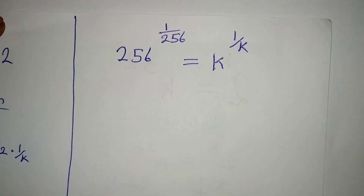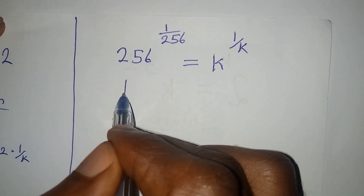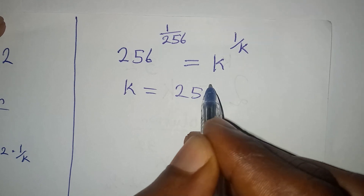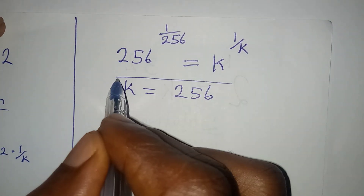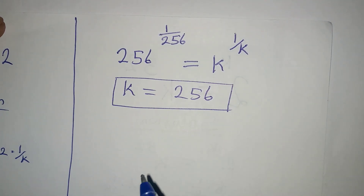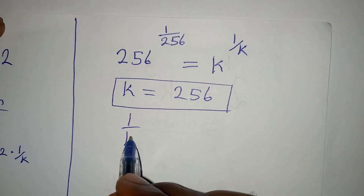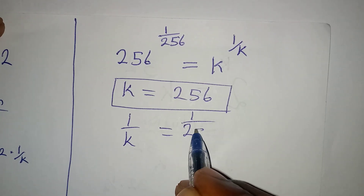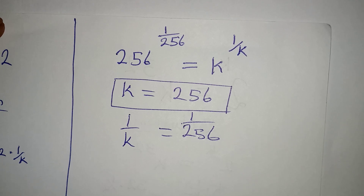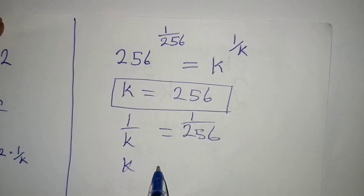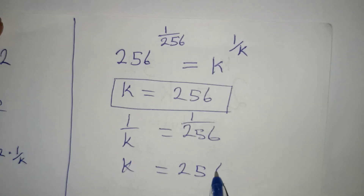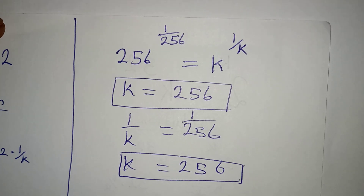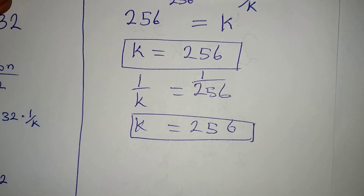So this is what I'm having. From here we can make our conclusion by comparing. If we work with the base, we have k equals 256. That is the value of k. Then if you work with the power, you have 1 over k equal to 1 over 256, which also gives k equals 256. You can see that we have the same value for k whether we work with the base or the power.